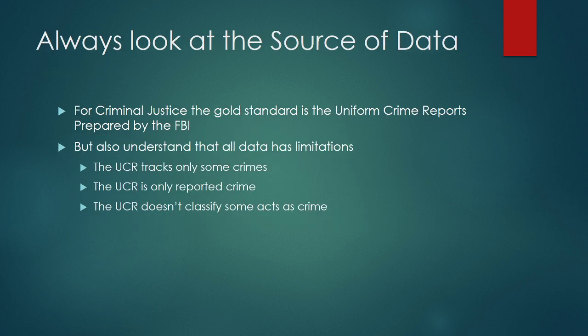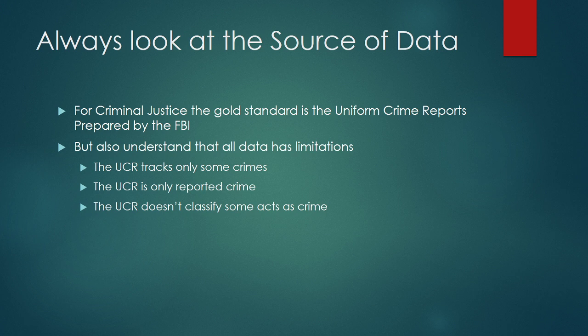You also have to pay attention to where you're getting your statistics from. Very often in the analysis of criminal justice data, we start with the Uniform Crime Reports. These are reports filed to the FBI from local police departments — it's been going on since the 1920s. The National Incident-Based Reporting System has revised it to make it more robust and accurate. But there are still problems: it only tracks some crimes, only tracks crimes that are actually reported, and doesn't classify some acts as crimes.